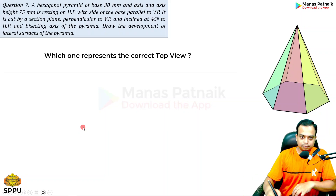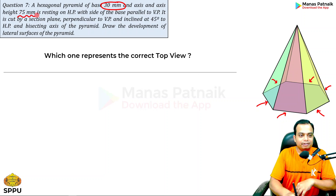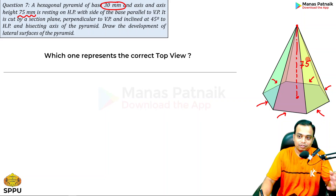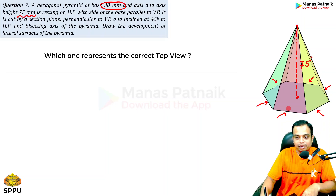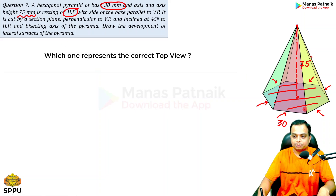The hexagonal pyramid has a base of 30 mm with six sides. The axis height is 75 mm — measured from the topmost point, the apex, to the center of the hexagon. This axis length is 75 mm and the base side is 30 mm. The pyramid is resting on HP with its base on HP.